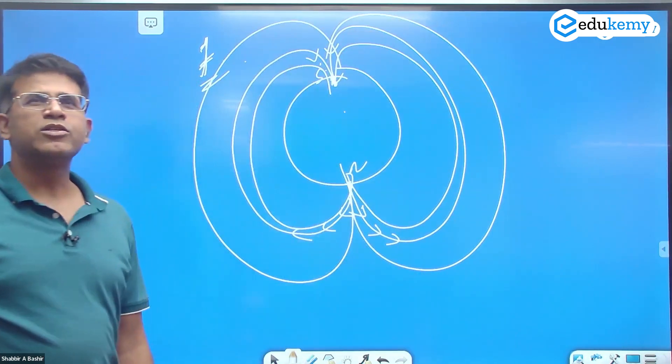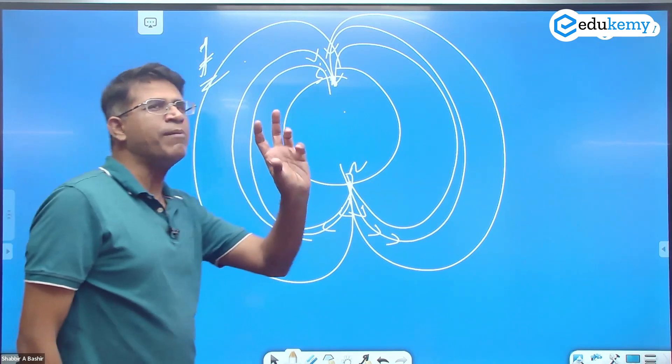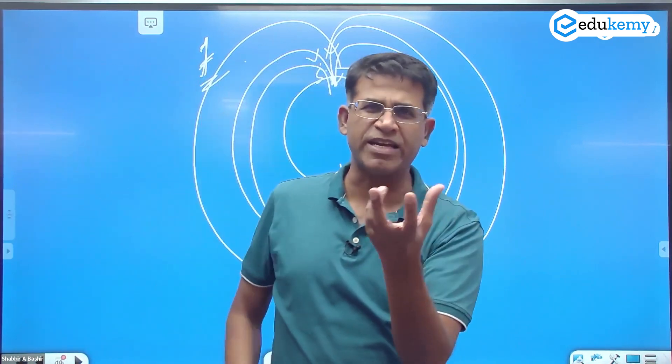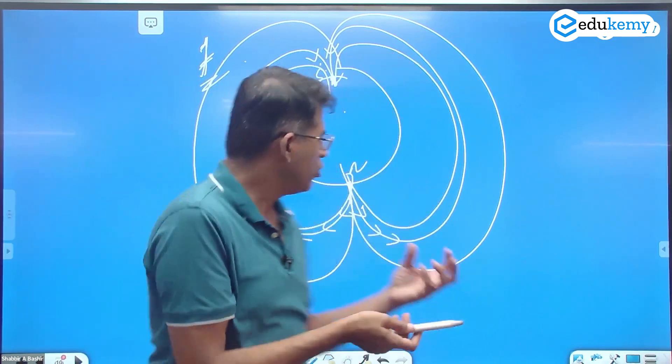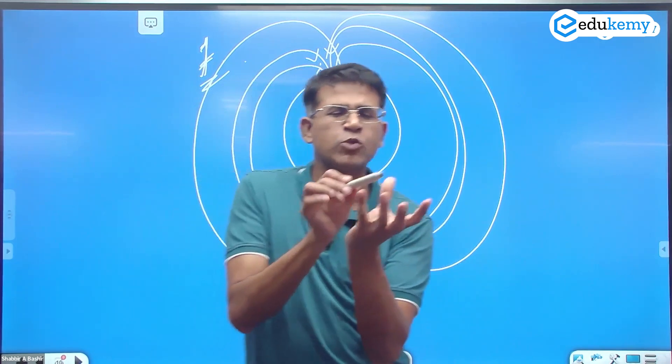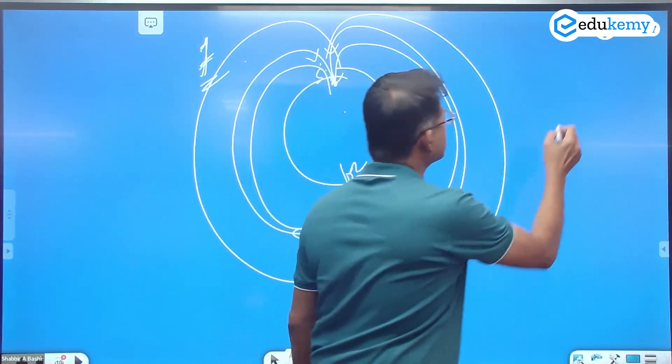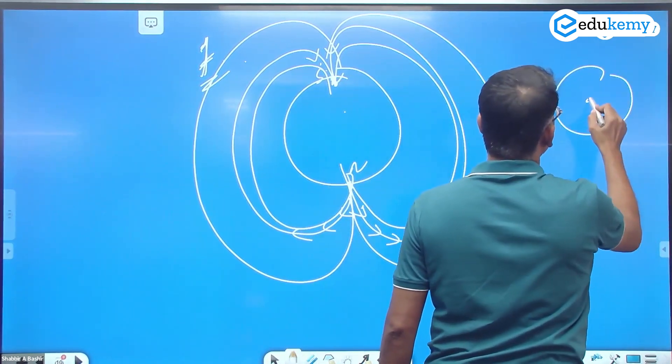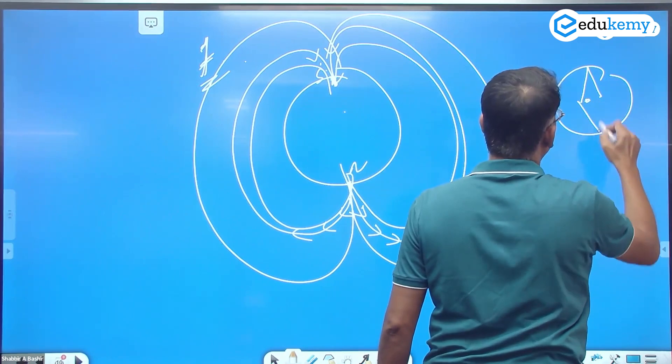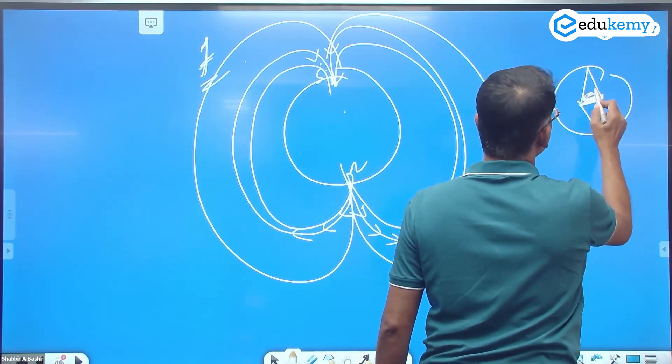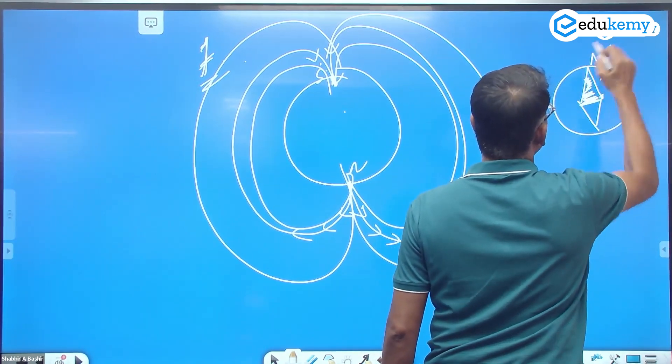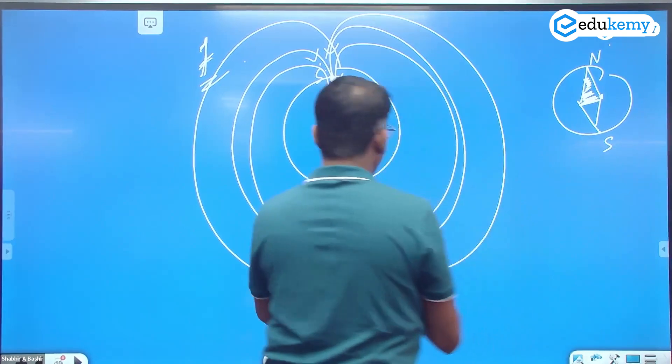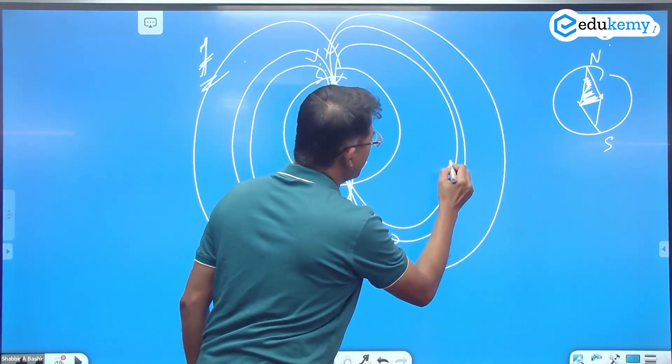So what happens is if you take a compass with a needle and you show it here, the compass will align. So this is a compass here and this is the needle here. So this is pointing towards north and towards south.